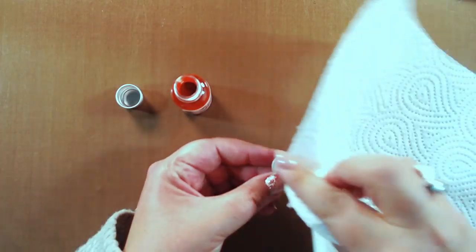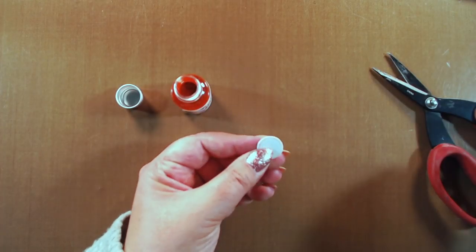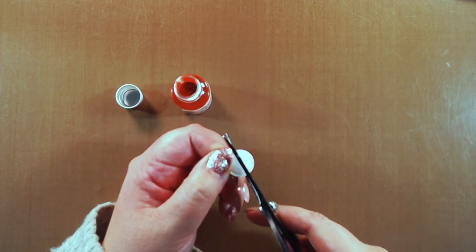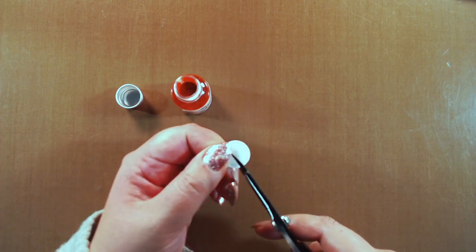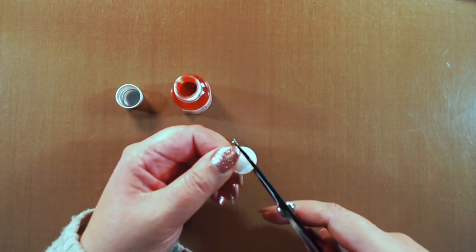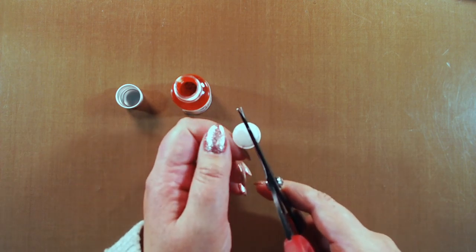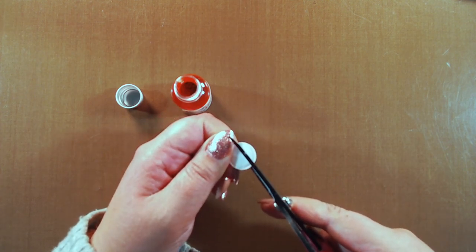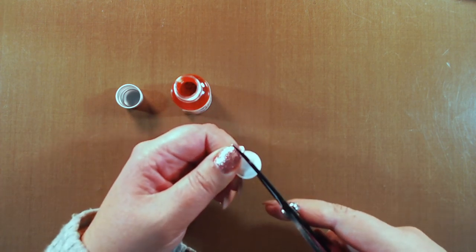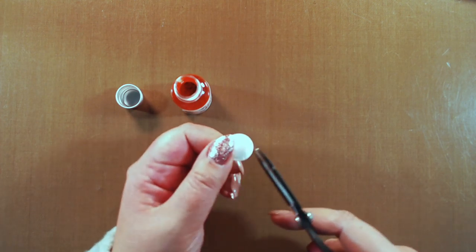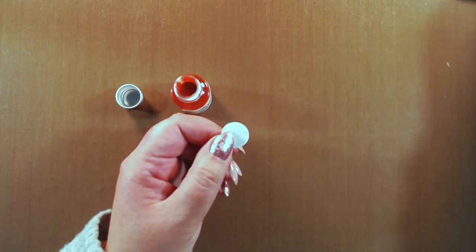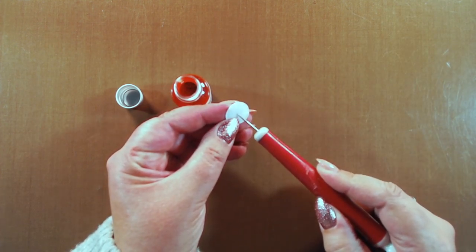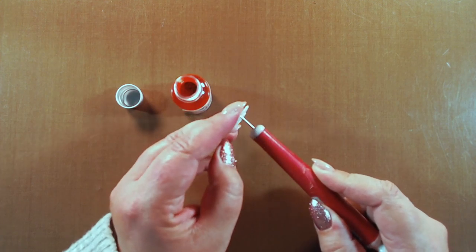Everyone would pierce a hole through the lid to use it like a salt shaker, but I wasn't happy with that. Instead, I cut little incisions in my little disc and then pierced the hole in the center.